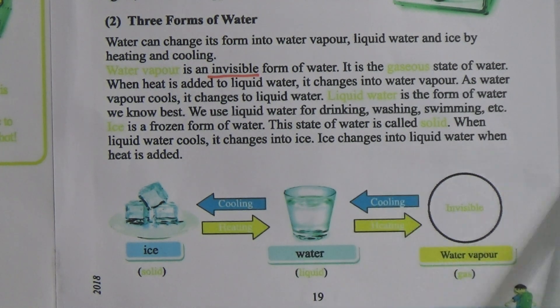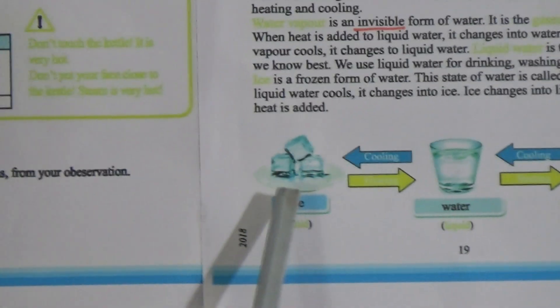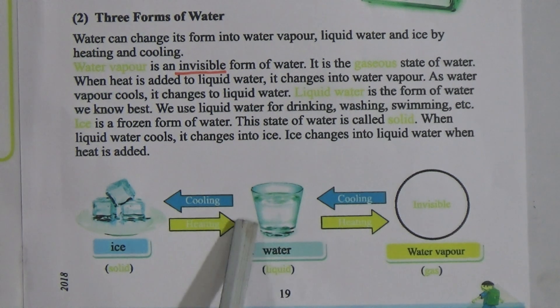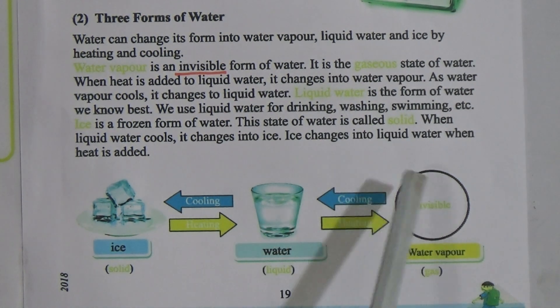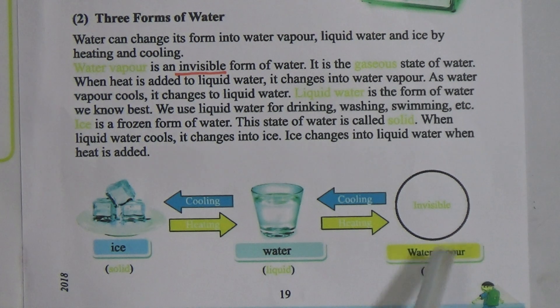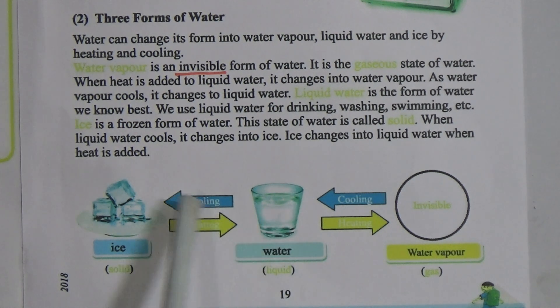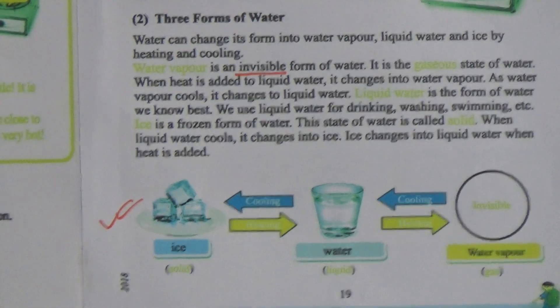When liquid water cools, it changes into ice. Ice changes back into liquid water when heat is added. If we apply more heat to water, it becomes invisible water vapor. If we cool the invisible water vapor, it becomes water again. If we cool the water further, it becomes ice again. We have to practice this portion with a drawing.